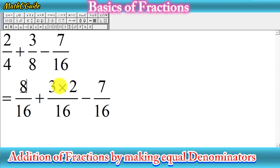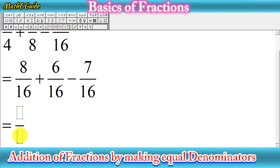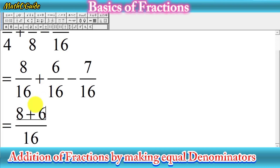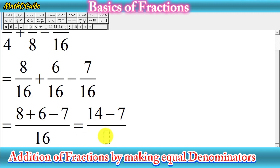Simplify the numerators: two fours are eight, and three twos are six. Now write the common denominator sixteen just once, then add or subtract the numerators: eight plus six minus seven. Eight plus six equals fourteen, and fourteen minus seven equals seven. So our final simplified answer is seven over sixteen.